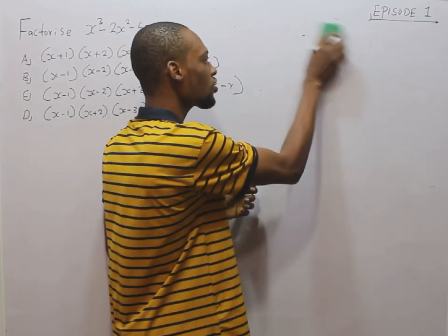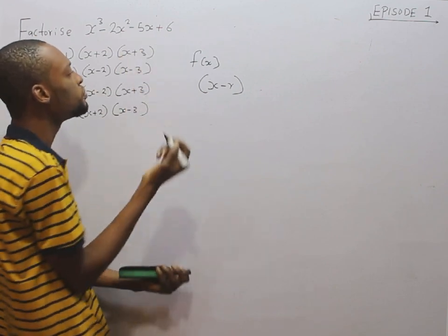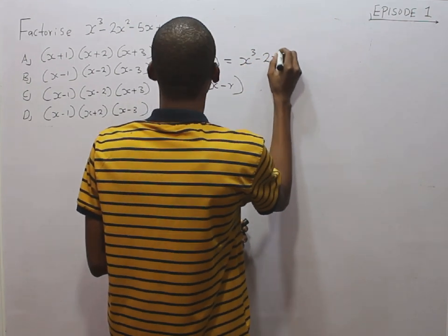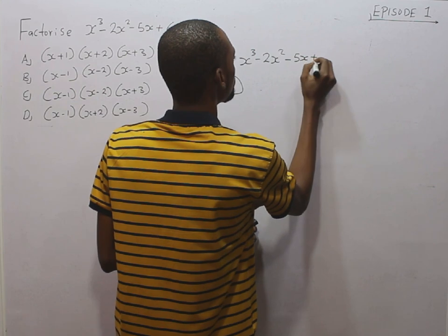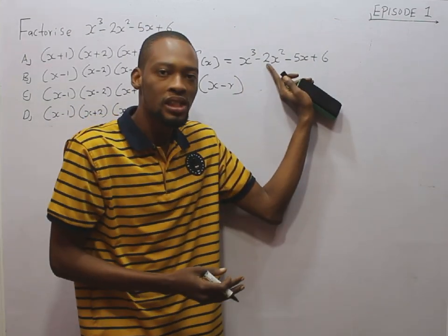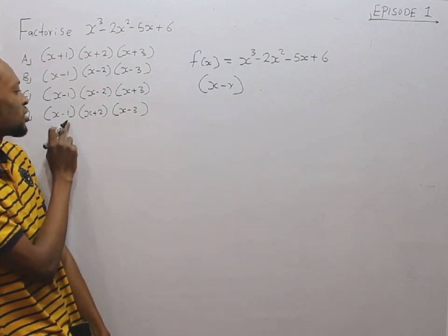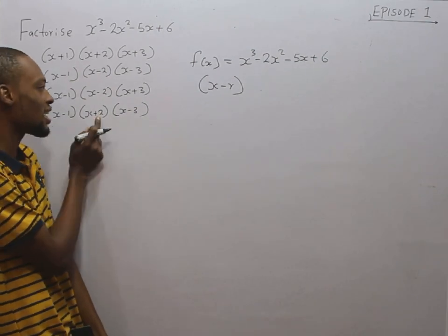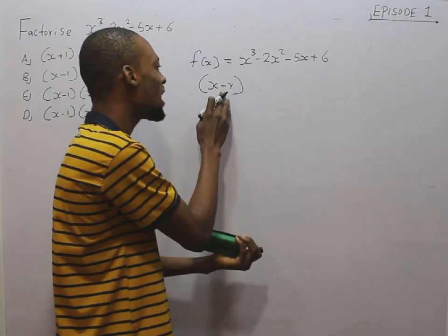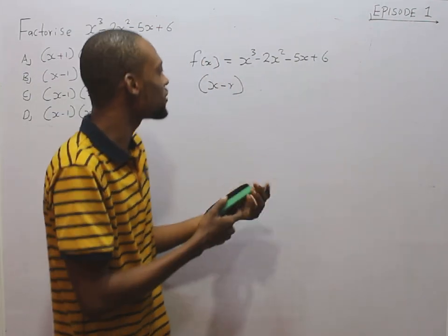This polynomial expression is simply a function of s. So the function of s equals s to the power of 3 minus 2s squared minus 5s plus 6. Now, s minus r is the divisor — it is dividing this polynomial. r is a constant. Looking at the factors, you see s minus 1, s plus 2. In this case r is 1, in this case r is 2, in this case r is 3, and so on. If this polynomial is divided by s minus r and the remainder is 0, then s minus r is a factor.